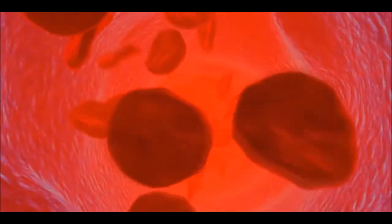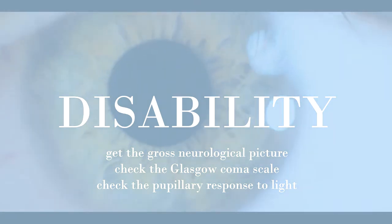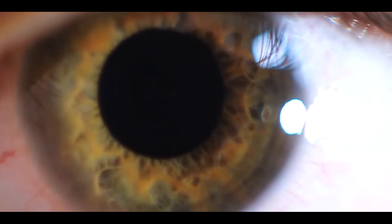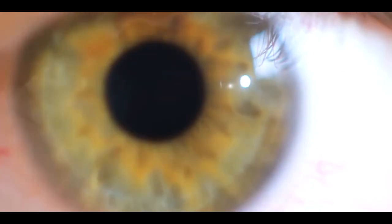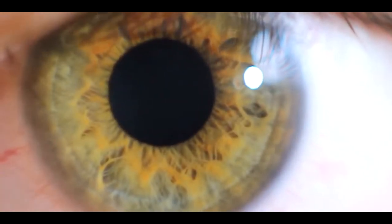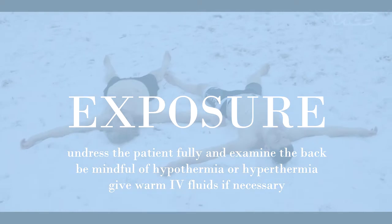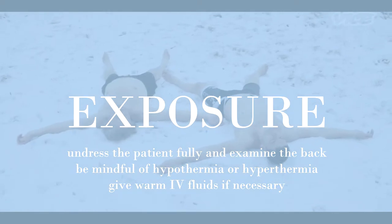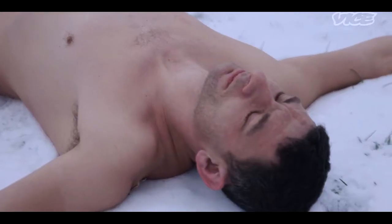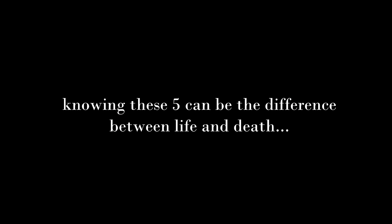Check the bleeding and stop it. D is for disability: look at the pupils — are they equal and reactive to light? Assess the GCS and neurological function. E is for exposure: think environment, hypothermia, hyperthermia, and other threats. Knowing these five can be the difference between life and death for your patient — or your career.